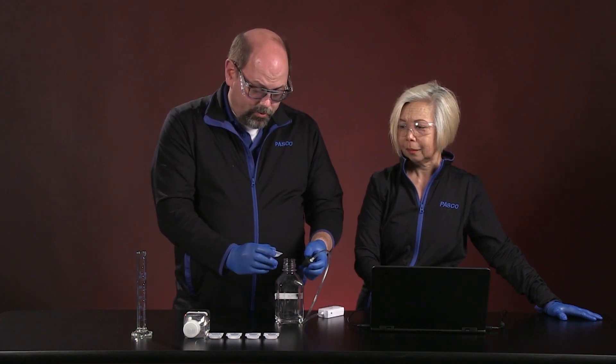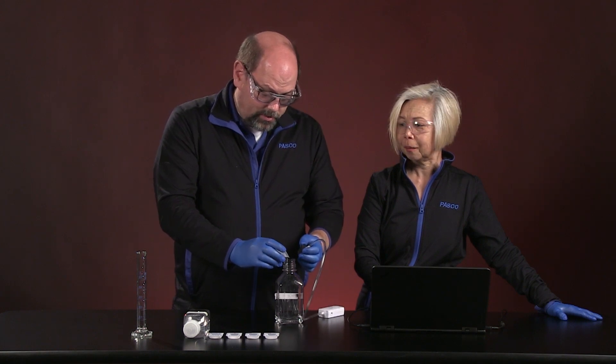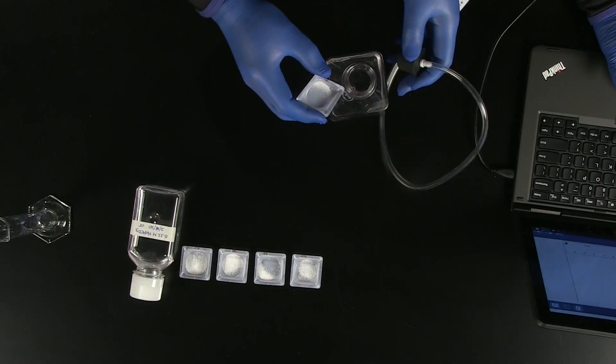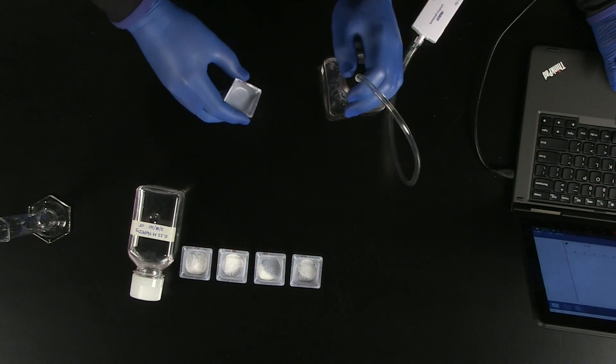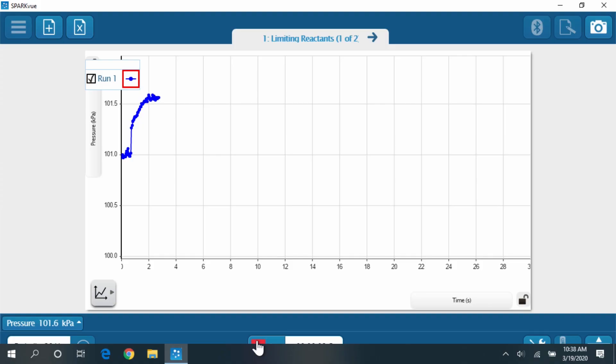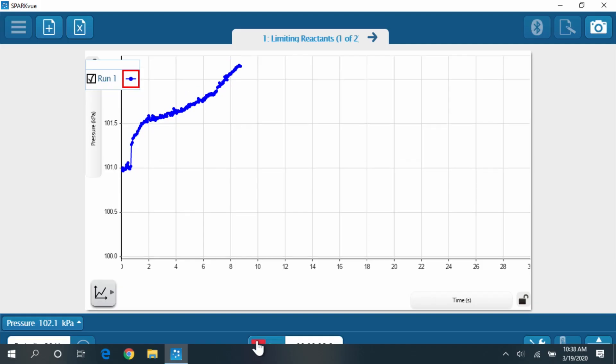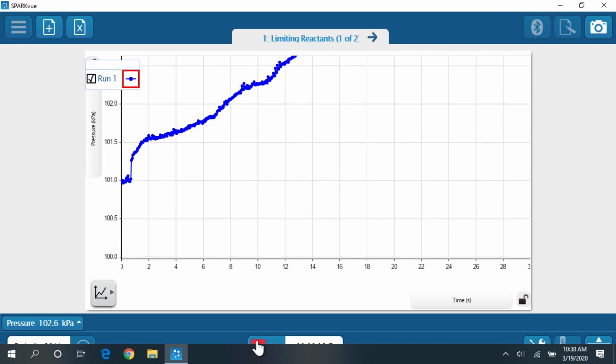Here we go. I'm going to pour this in and then cap it off as quickly as I can. I'm going to give it a little bit of a flick to get all this material into this sodium bicarbonate. One, two, three. There we go. And swirl it around just a little bit. Oh, you can already see that gas is being produced. And that is indicated by the change in pressure.